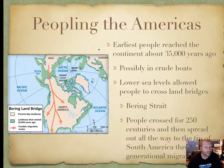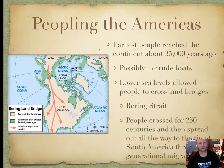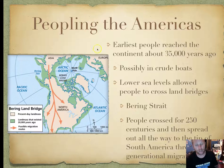People crossed for 250 centuries, which is a long time, and then spread out all the way to the tip of South America through generational migrations. With every generation that moved a little further south and east, they adapted and their culture changed, which eventually made all these different cultures that didn't even recognize their ancestors.